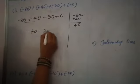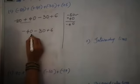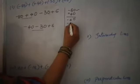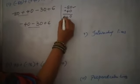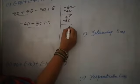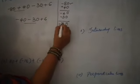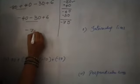Minus 30. Plus 6. So again, first two numbers: minus 30. When two negative numbers are there, you have to add and give the sign of minus. Minus 70.